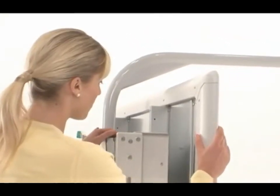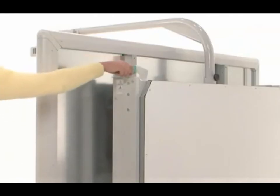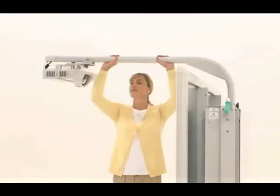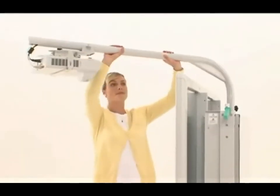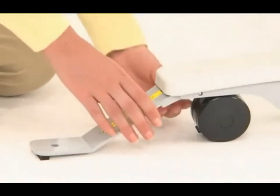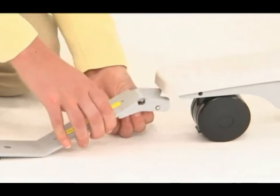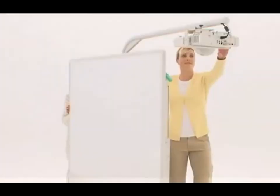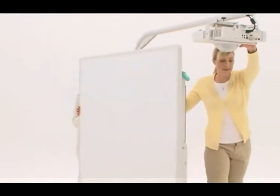The entire unit can also be made compact by lowering the stand to its bottom-most position and turning the arm 90 degrees. Large casters ensure stability when moving it from room to room.